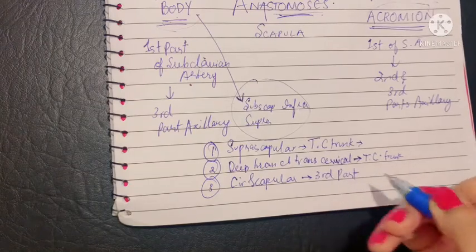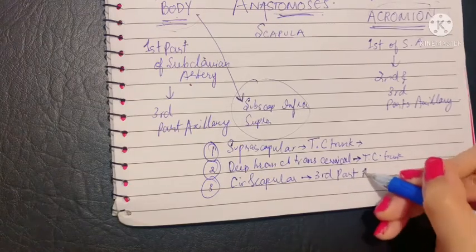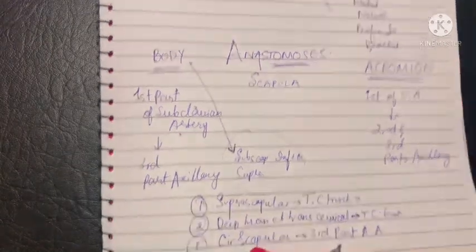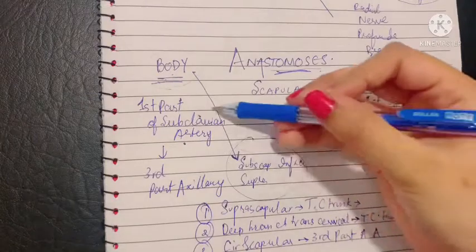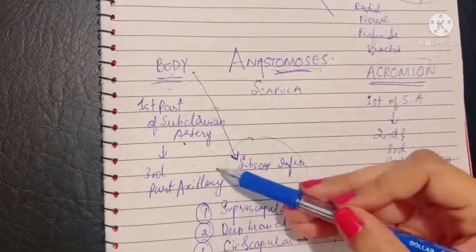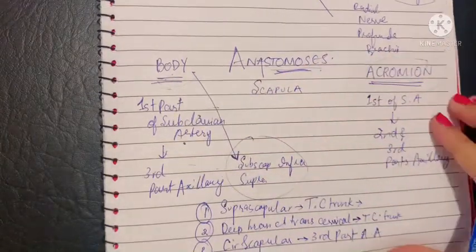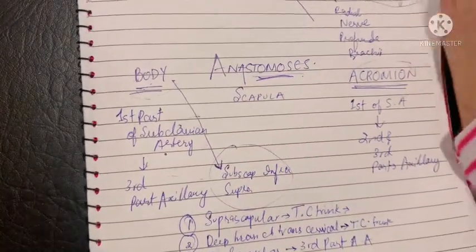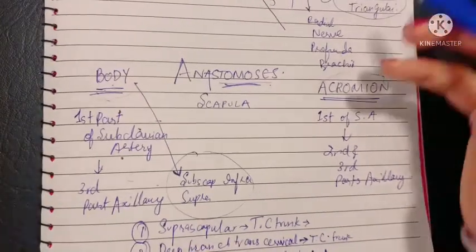As you can see, it is proven that there is a connection between the subclavian and the axillary artery via the body anastomosis. Now let's talk about the anastomosis around the acromion.